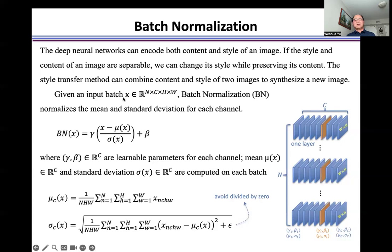Given an input batch, Batch Normalization normalizes the mean and standard deviation for each channel, where gamma (γ) and beta (β) are learnable parameters for each channel.